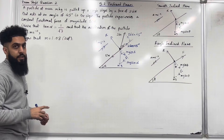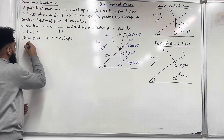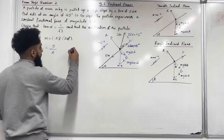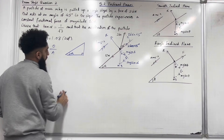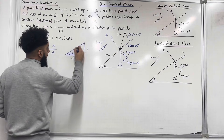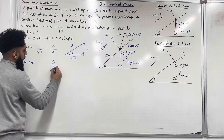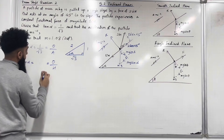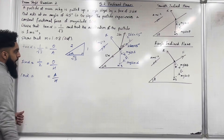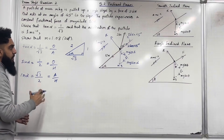We need to find alpha. Since tan alpha equals 1 over root 3, which is opposite over adjacent, we can form a right-angle triangle with opposite = 1 and adjacent = root 3. By Pythagoras, the hypotenuse is 2. Therefore sin alpha equals 1 over 2, and cos alpha equals root 3 over 2. We will use these values in our solution.